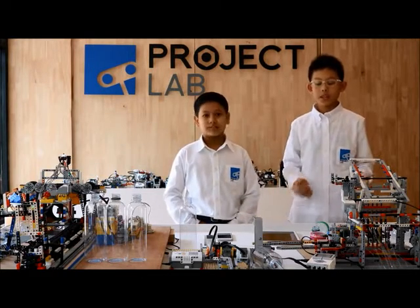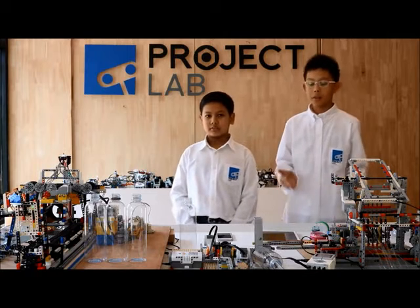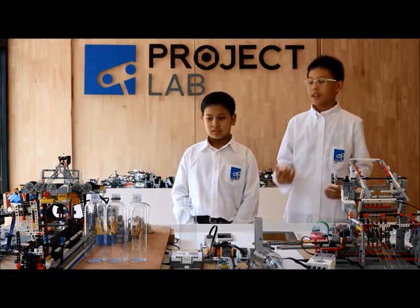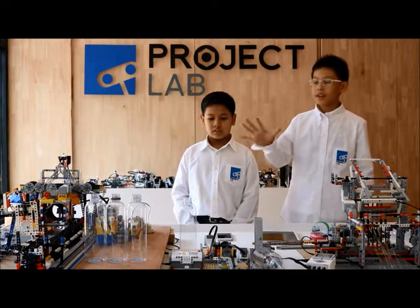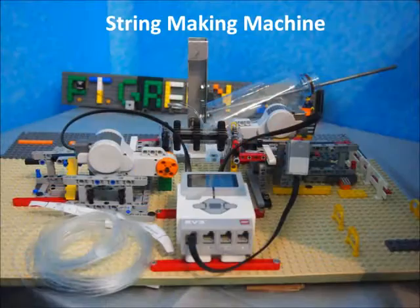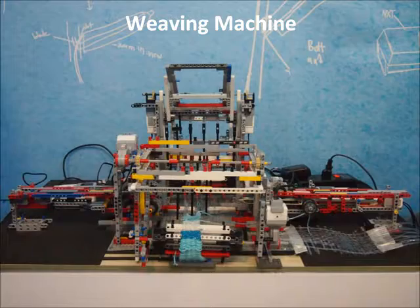We decided to use Thai Local Wisdom and combine it with Lego Mindstorms. This is our model. There are three machines in total: the bottle cutting machine, the string making machine, and the weaving machine.